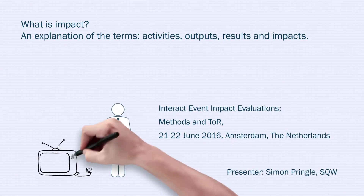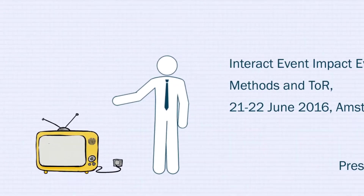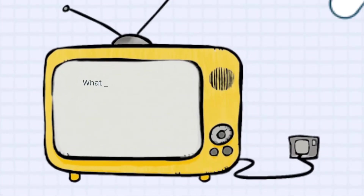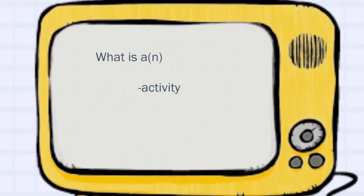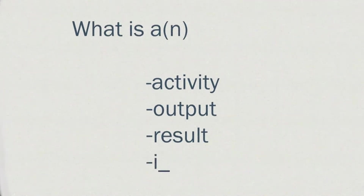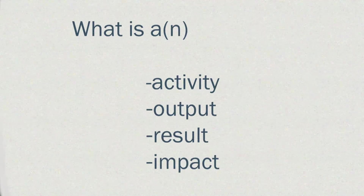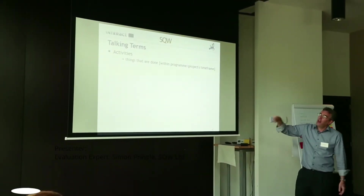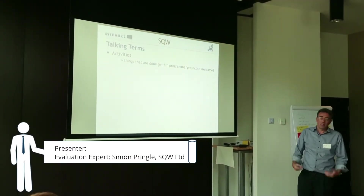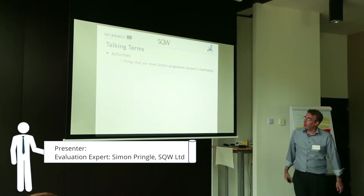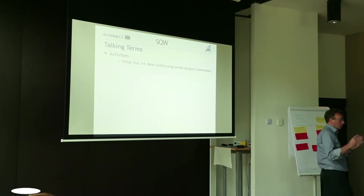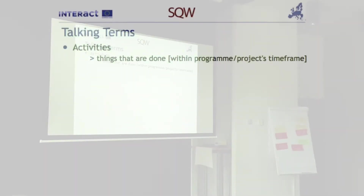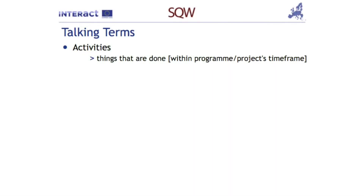In this video, you will hear an explanation on how we use the common terms for evaluation and especially what is the difference between result and impact. In terms of your programmes and projects, activities are the things that are done typically within the programme or the project timeline. And you can largely count those, you can monitor those.